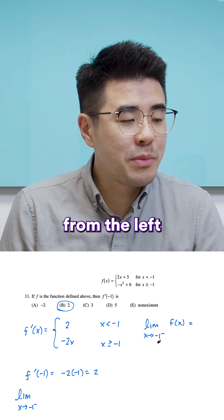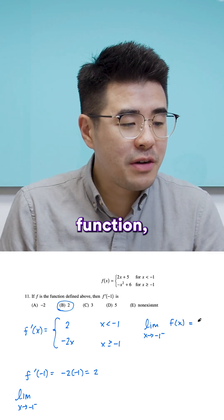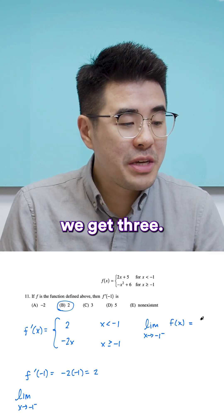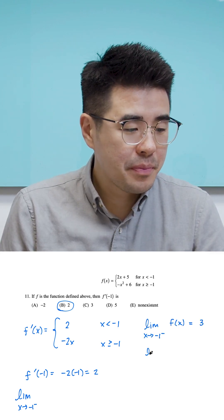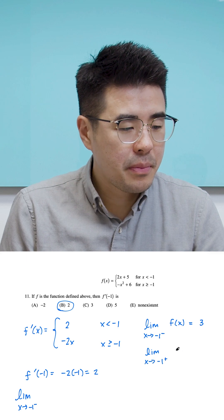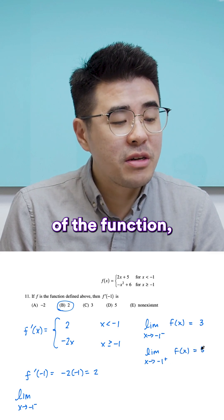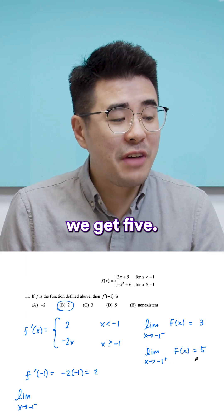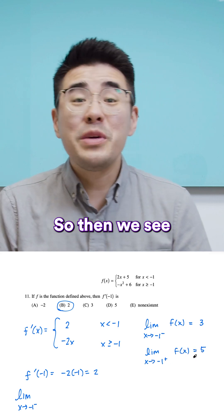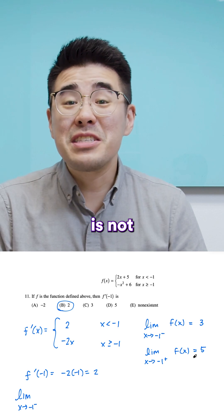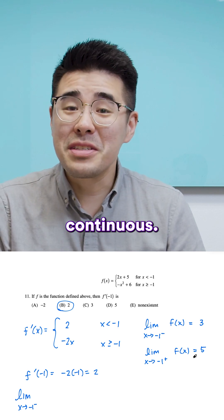If we approach negative 1 from the left using the top function, we get 3. If we approach negative 1 from the right, we get 5. So the function is not continuous.